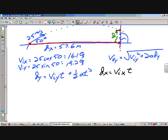So this second part, one-half AT squared, doesn't count. Acceleration is 0. That goes away. We have 57.6 equals 16.1 times time. Time is 3.6 seconds.